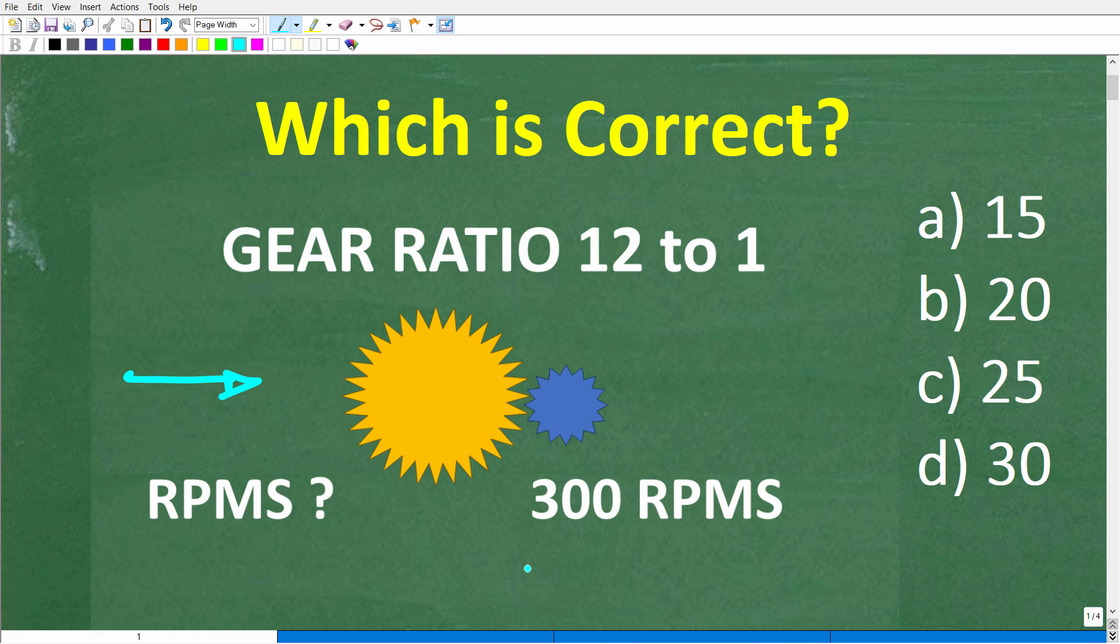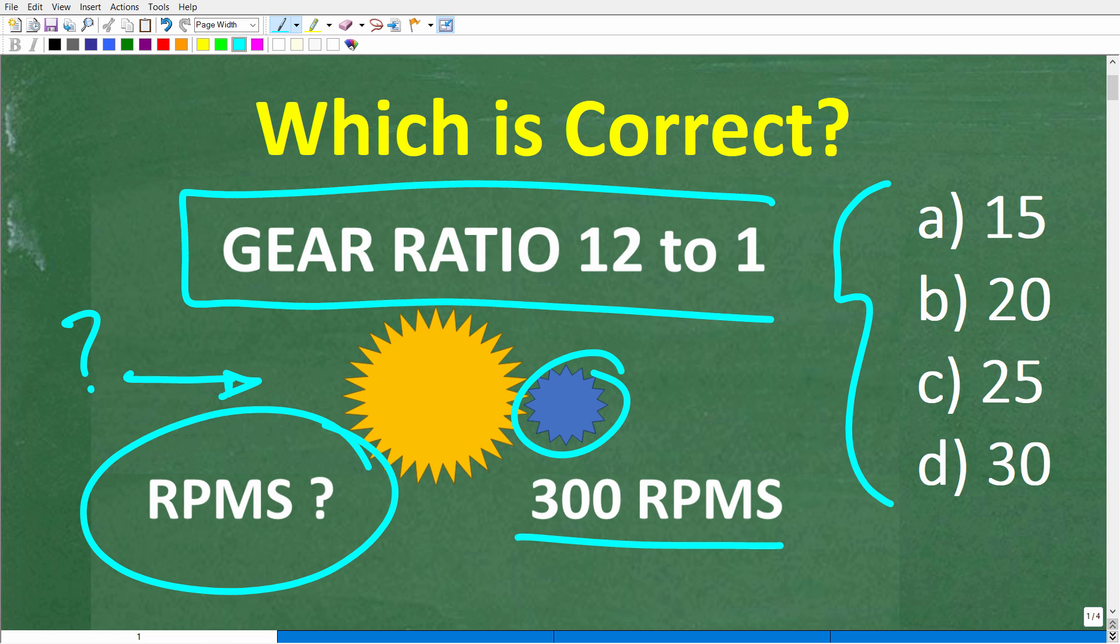This is our problem. We have a multiple choice question. Remember, we're trying to determine how many RPMs the big gear will turn if it's being driven by the small gear. The small gear is going 300 RPMs, and the gear ratio is 12 to 1.